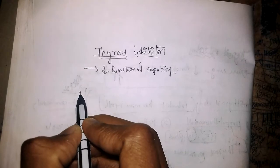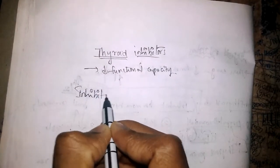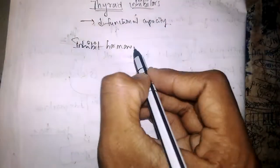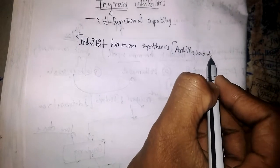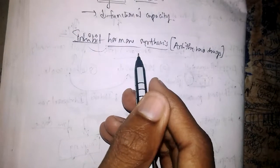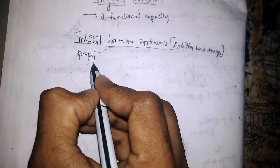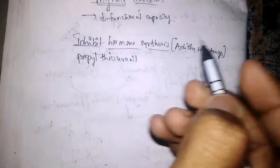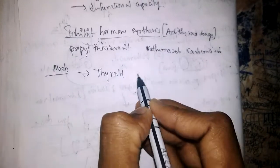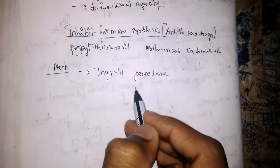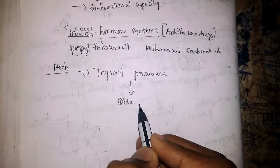The first class of drugs is those that inhibit hormone synthesis, or antithyroid drugs. In this category we have mainly three drugs: propylthiouracil, methimazole, and carbimazole. The mechanism of action is that these drugs inhibit thyroid peroxidase.